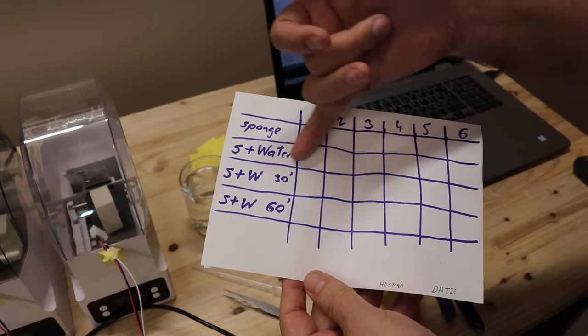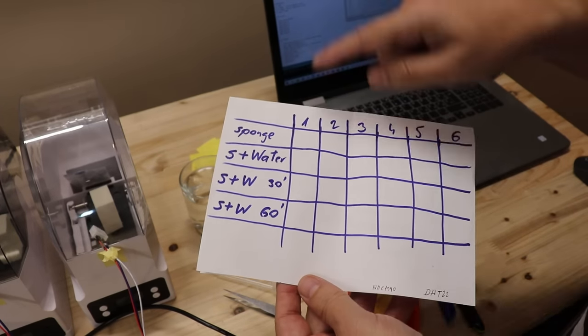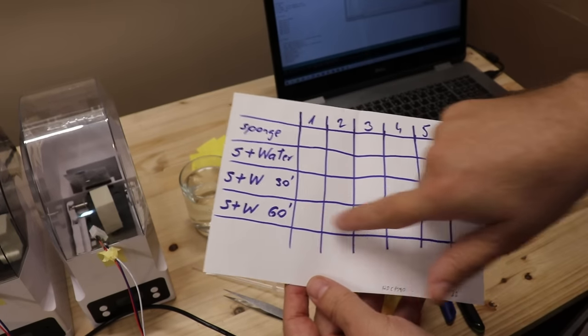Then I will add two milliliters of water and measure that weight. Then I will measure the weight after 30 minutes and after 60 minutes.